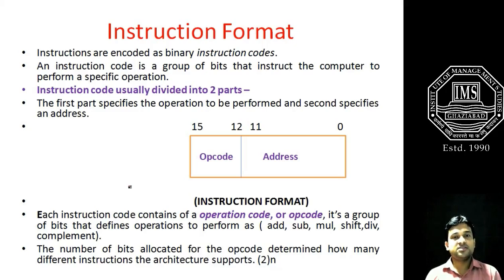Normally, this instruction code is divided into two parts, which is called the basic nomenclature or instruction format. So the instruction format is divided into basically two parts. The first part is called opcode and the second part is known as the address field. The first part specifies the operation which is to be performed on that operand, which is stored in that address.